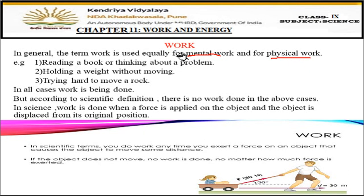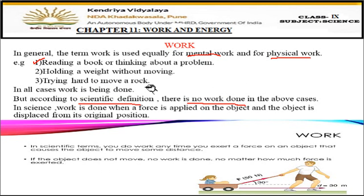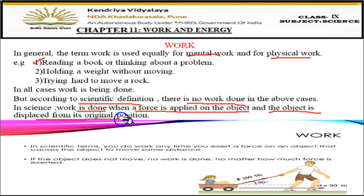Remember, the term 'work' is different in science and in our daily life. In daily life, everything we do is called work. But according to the scientific definition, there is no work done in those above examples. Reading a book — no work done. Holding a weight without moving — no work done. Trying hard to move a rock that doesn't move — no work done. In science, work is done when a force is applied on an object and the object is displaced from its original position.